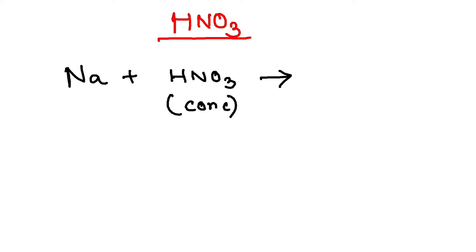If you remember, whenever you allow metal and acid to react, it produces salt and hydrogen gas. But this will produce the salt NaNO3, but it won't produce this hydrogen. This hydrogen won't be produced.